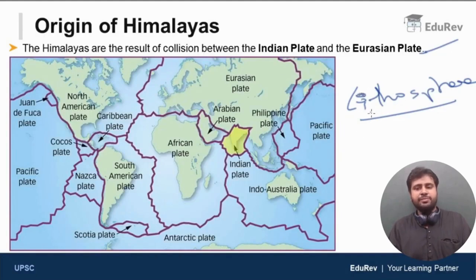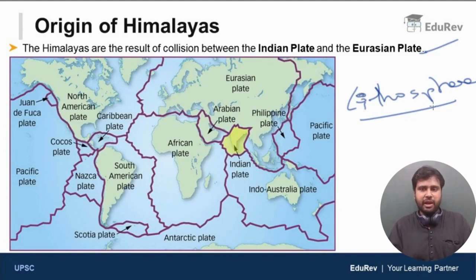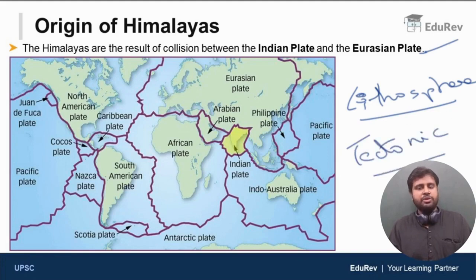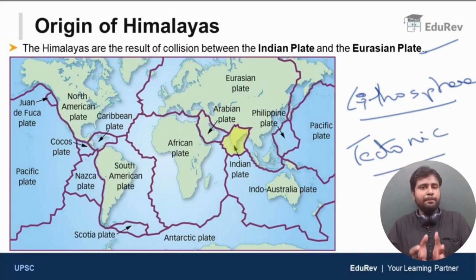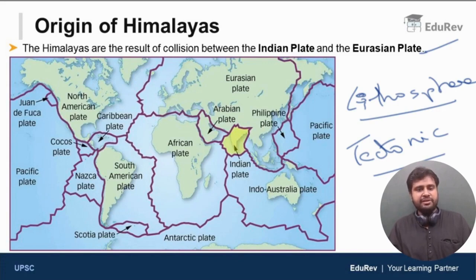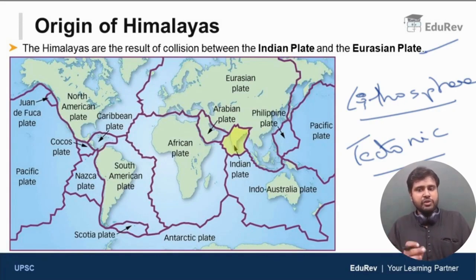The entire lithosphere is broken down into multiple tectonic plates. Some tectonic plates are major: Eurasian plate, African plate, Indo-Australian plate, Pacific plate, South American plate, North American plate — all these are major or large tectonic plates. We also have minor tectonic plates: the Philippines plate, Indian plate, Arabian plate, Caribbean plate, Cocos plate, Nazca plate, and Scotia plate.